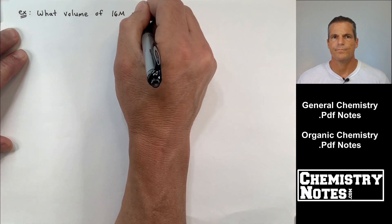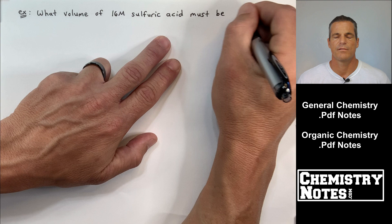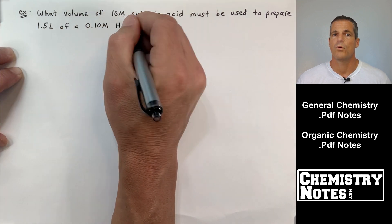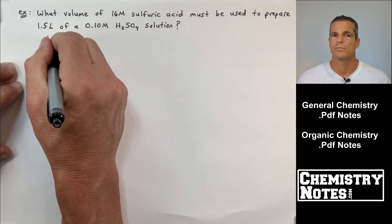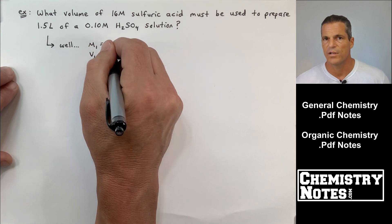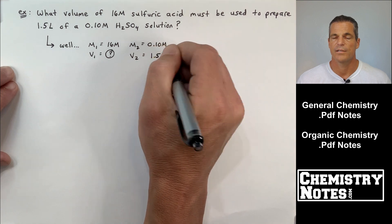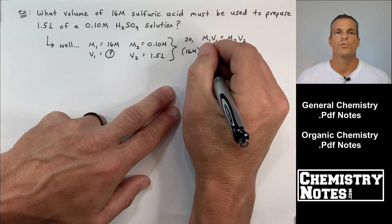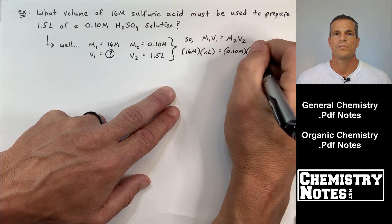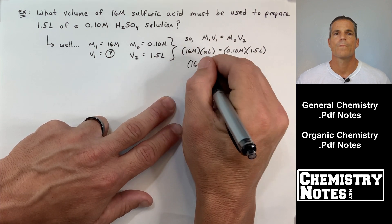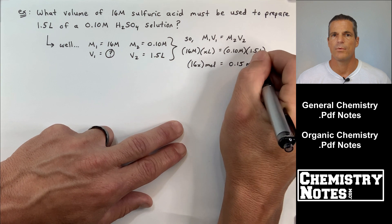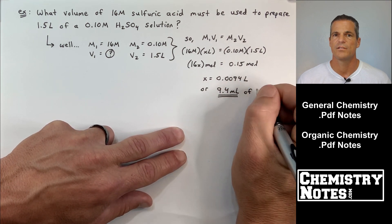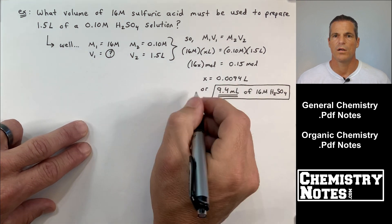All right. Let's do an example, a dilution problem. What volume of 16 molar sulfuric acid, that's very concentrated, what volume of 16 molar sulfuric acid must be used to prepare 1.5 liters of a 0.10 molar H2SO4 solution? You see you have liters of A and then the concentration in big M. Chances are we're going to multiply them together, right? Yes. So let's just gather up all of our knowns and unknowns here. M1 16 molar, V1 unknown, M2 0.10 molar, V2 1.5 liters. We put these guys all together inside of our M1 V1 equals M2 V2. We'll make sure our volumes have the same units and they're both in liters here. We end up with a value for X, simple algebra of 0.0094 liters or 9.4 milliliters of 16 molar H2SO4.